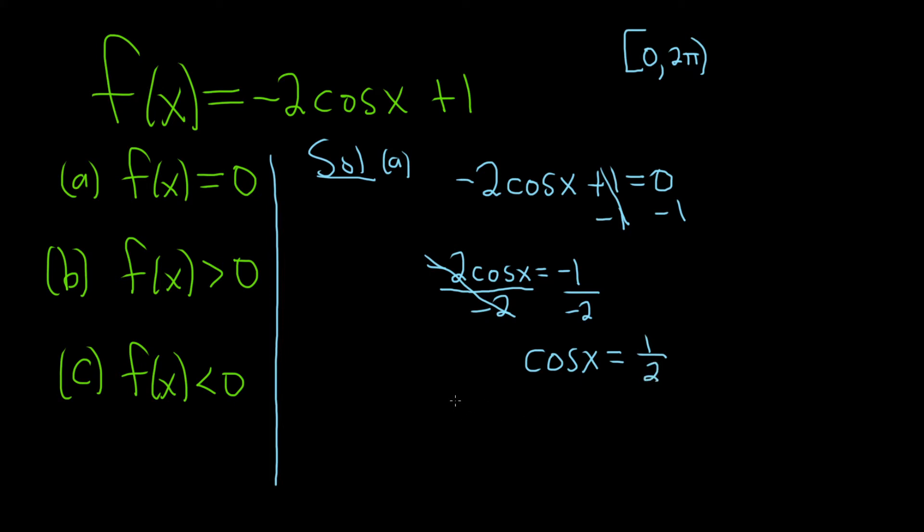All right, so now we just have to think. What are the values of x such that the cosine of x is 1 half, where we're between 0 and 2 pi? Well, one obvious answer from memory, this is just from memory, is pi over 3. That's one of the answers.